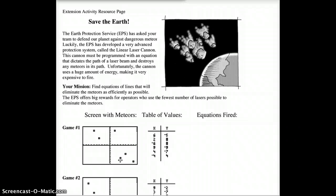So you have been employed as a member of the Earth Protection Services group to use this cannon. We have this cool cannon called the Linear Laser Cannon. All it does is shoot in a complete straight line, but it will disintegrate or destroy anything that it touches, including these meteors, no matter how big or small they might be.